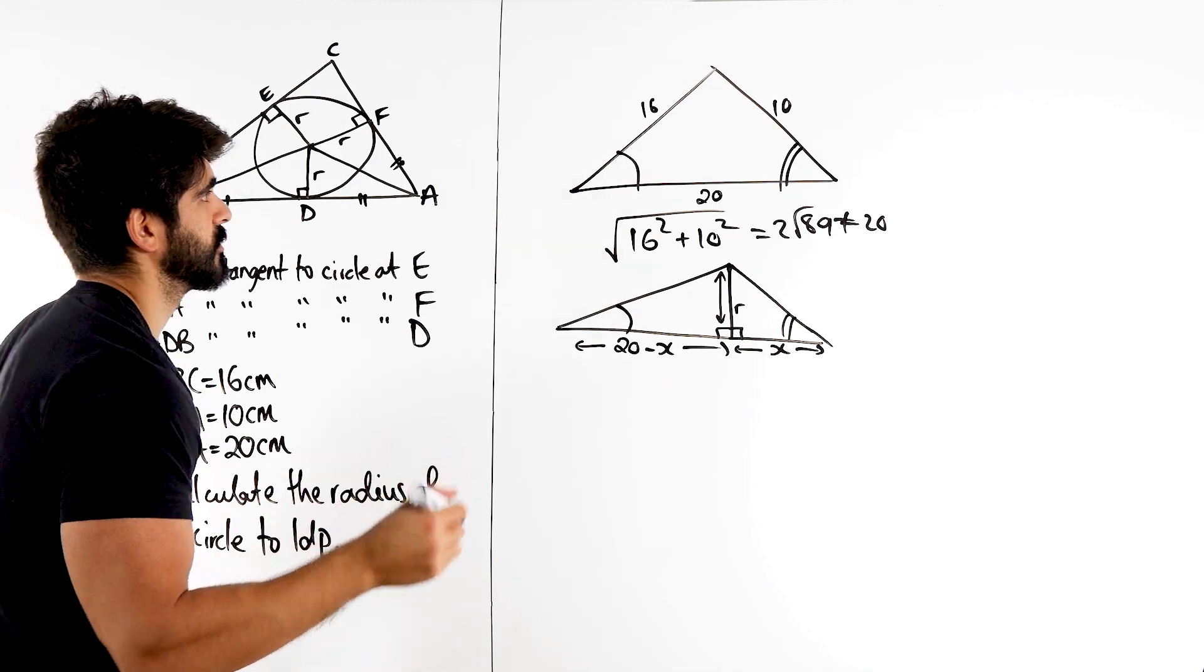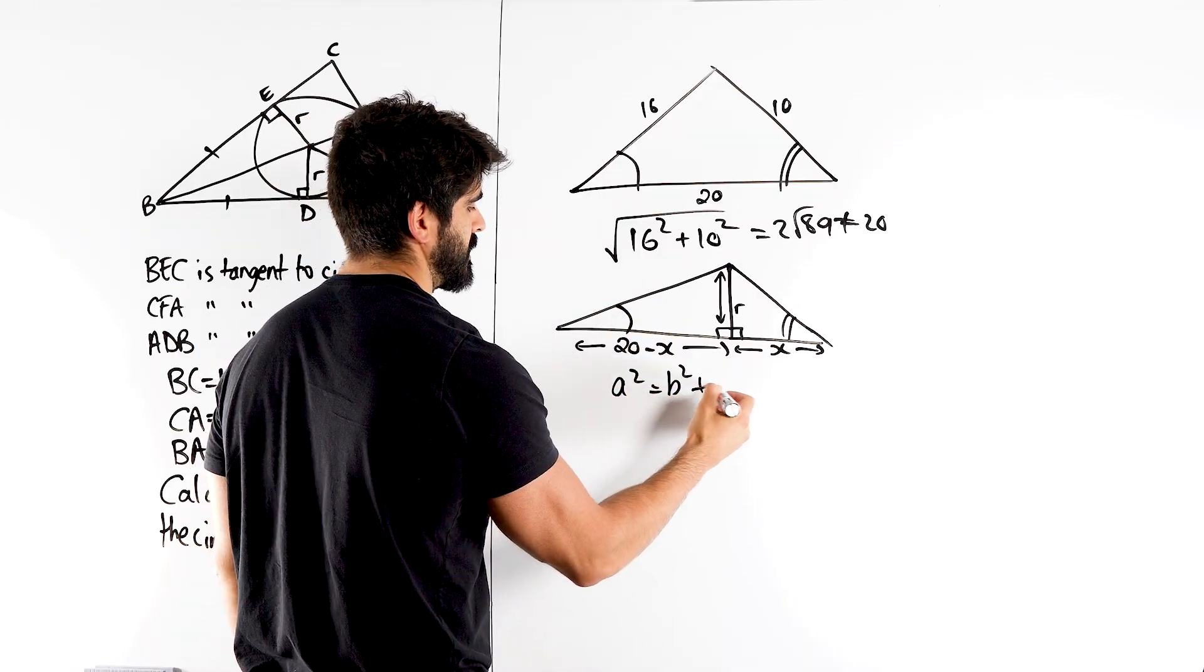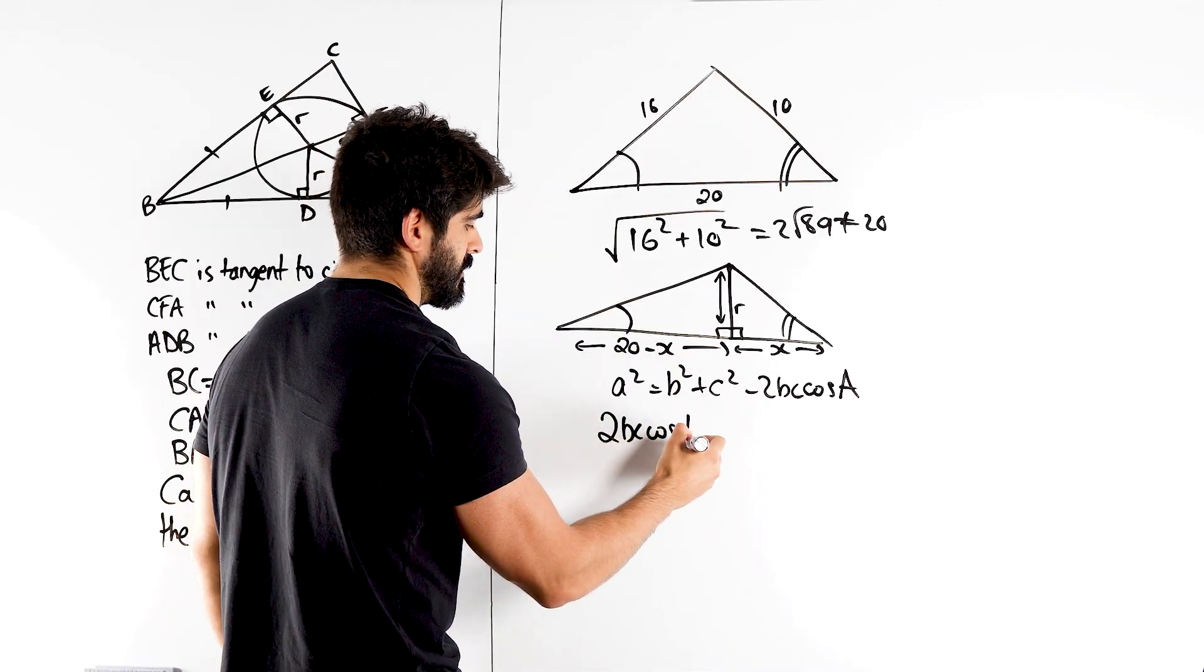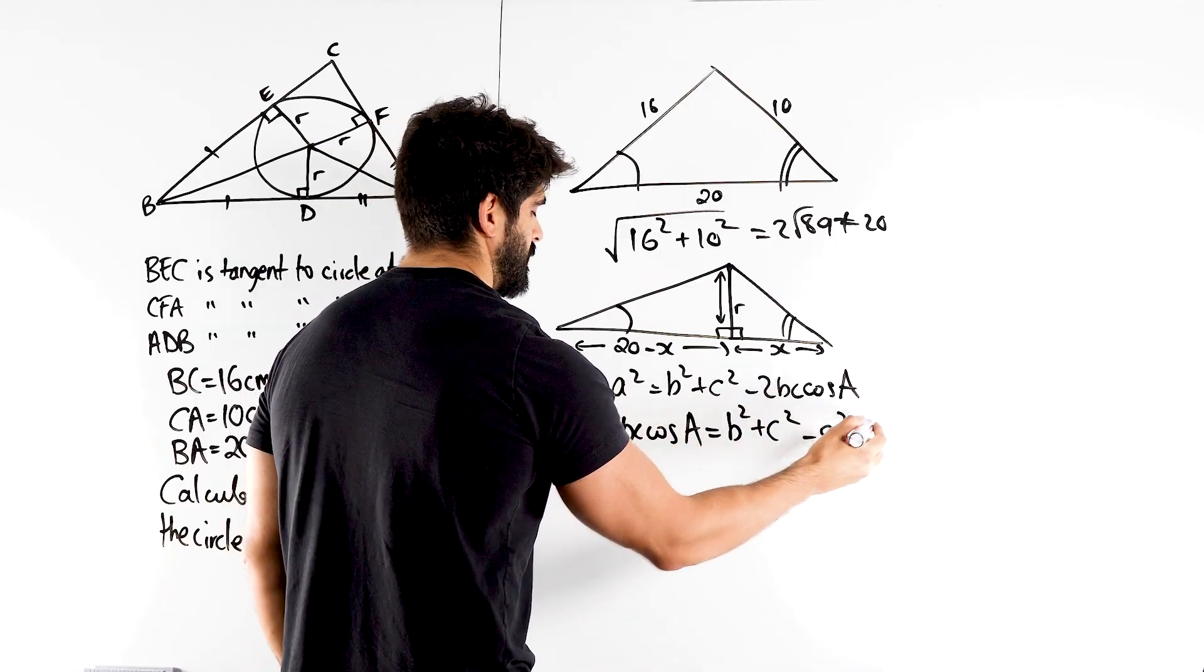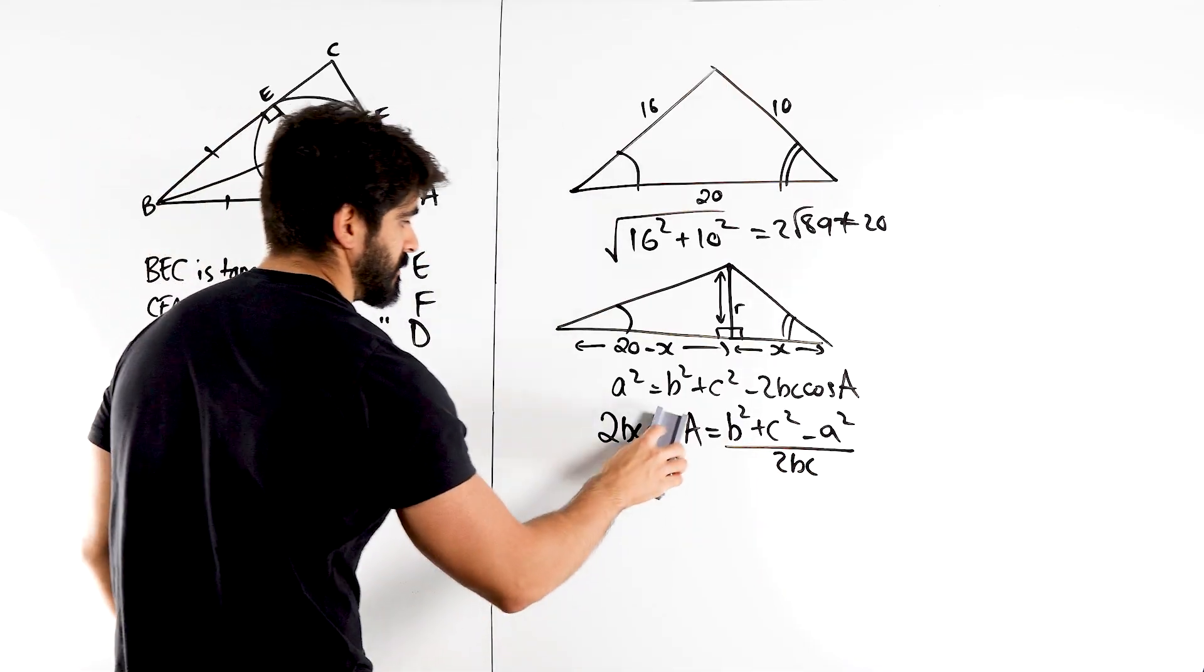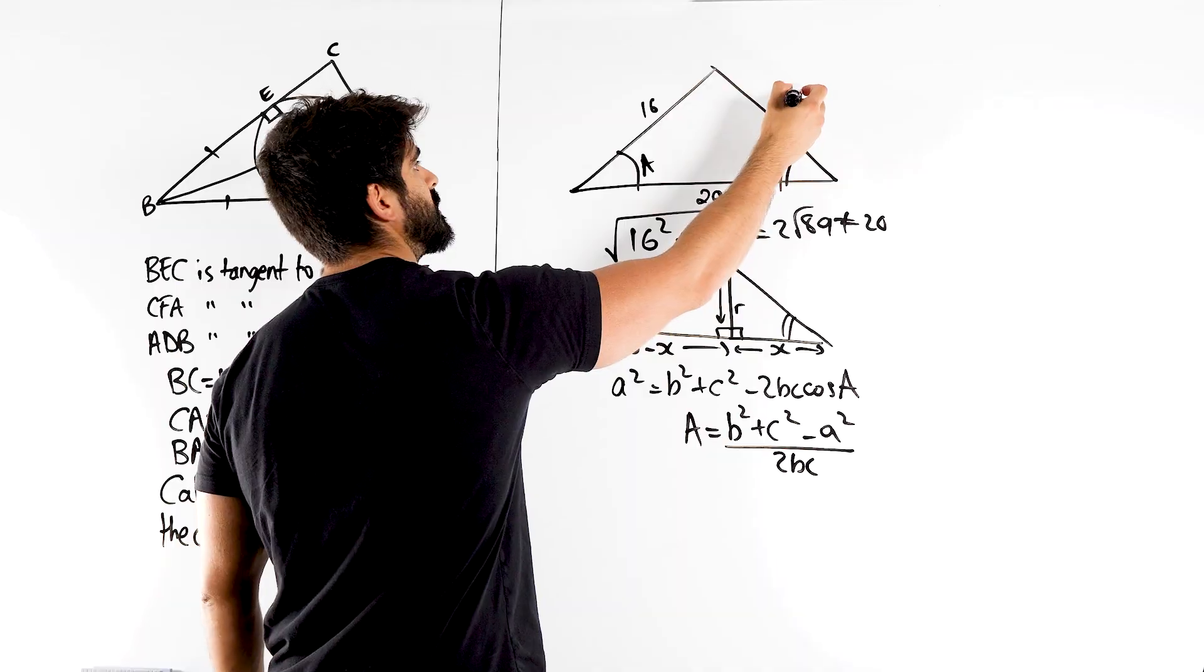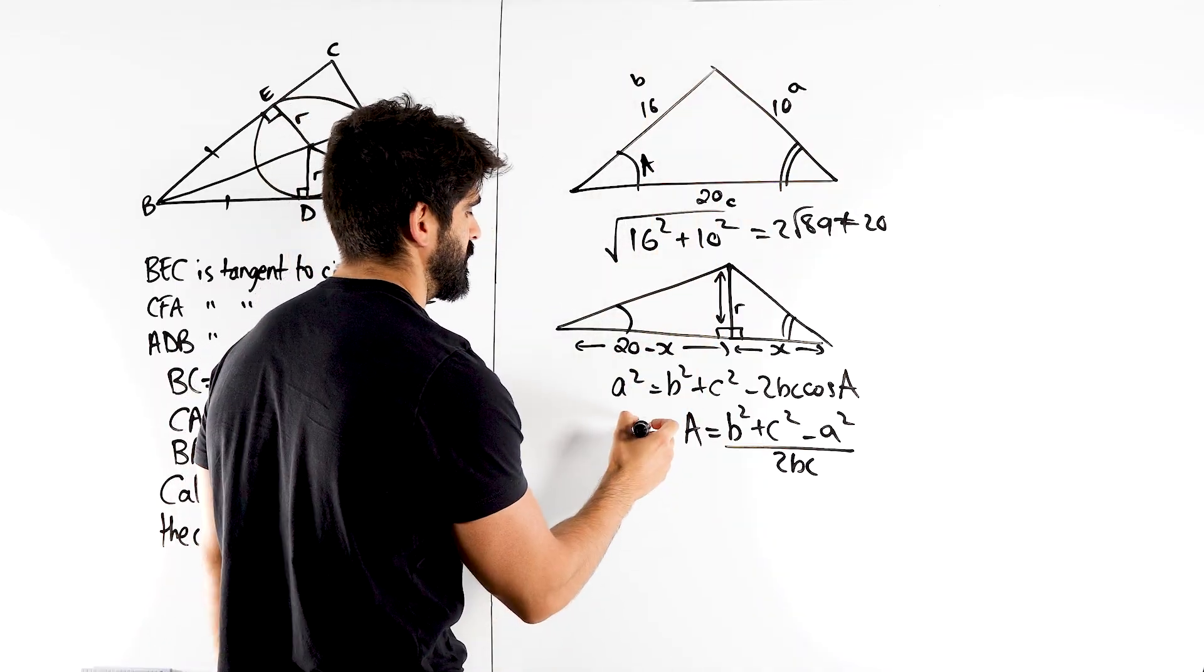We could just use the cosine rule. So yeah, let's use the cosine rule. Now there is a rearranged version of the cosine rule. So remember we have a squared is b squared plus c squared minus 2bc cos a. To rearrange we switch these two around. So we get 2bc cos a is b squared plus c squared. We subtract the a squared and then you divide by 2bc. This is what you do if you forget what the rearranged version is. Okay, so if this is capital A, this is lowercase a, this is my b and this is my c. And sorry, this should say cos a.